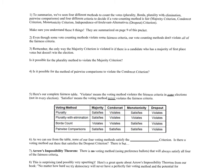To summarize, we've seen four different methods to count votes: plurality, Borda, plurality with elimination, and pairwise comparisons. And four different criteria to decide if a vote counting method is fair: the majority criterion, the Condorcet criterion, the monotonicity criterion, and independence of irrelevant alternatives, also known as the dropout criterion. Make sure you understand those eight things — they're summarized on page nine of this packet.